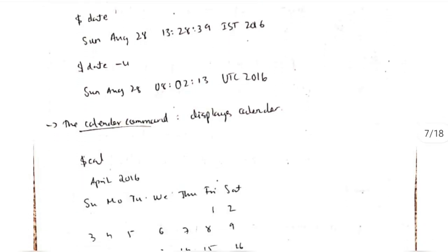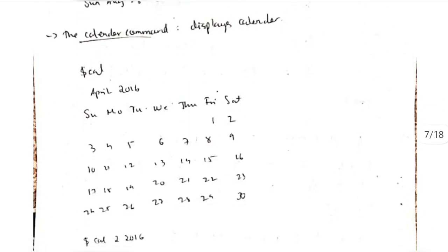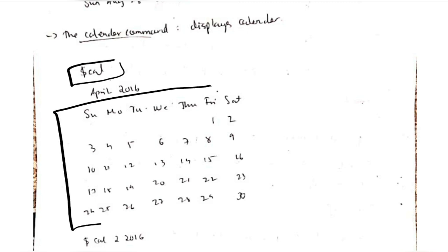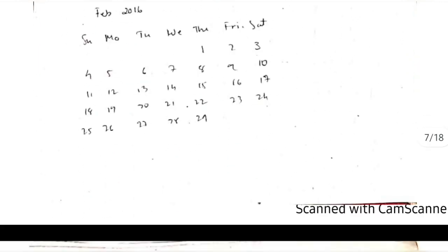The next one is the calendar command. If we write 'cal', it will display the current month's calendar. If you want to display a specific calendar, we can write the month number and the year, and it will display that specific month's calendar.